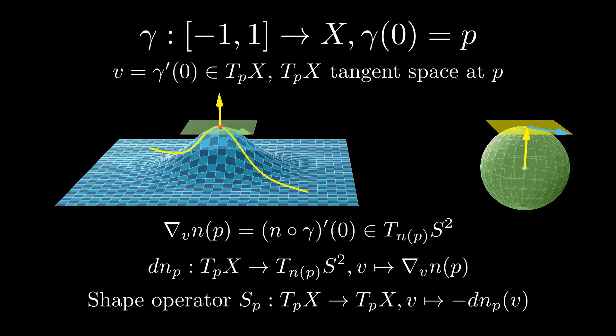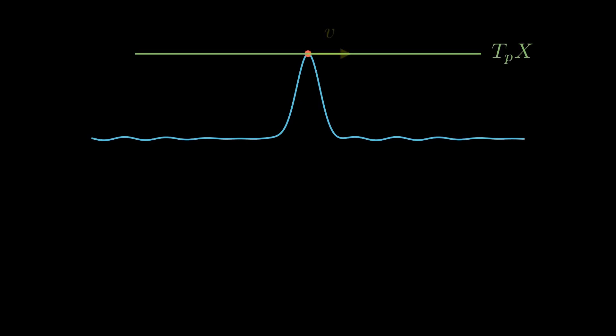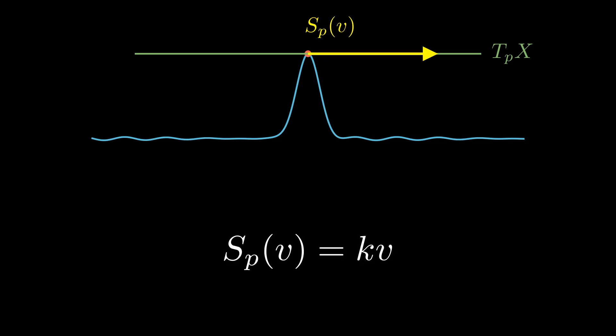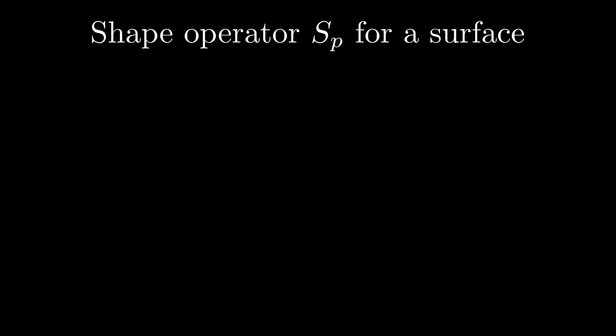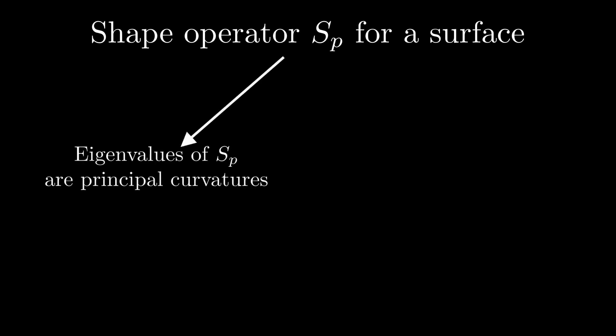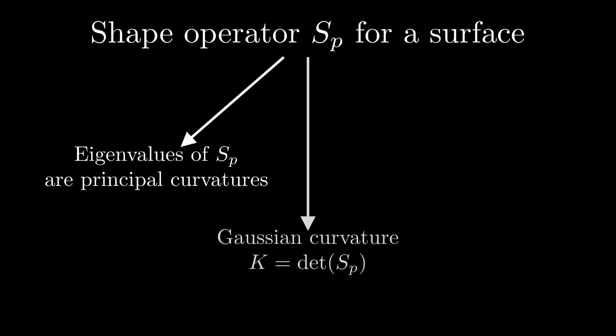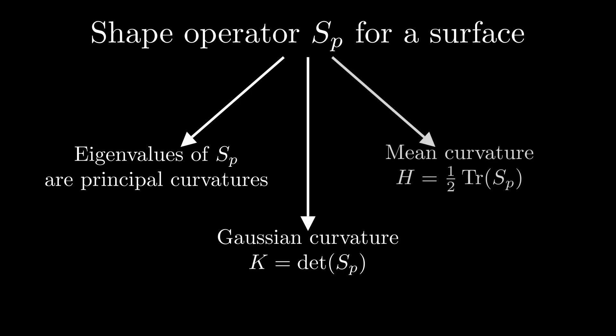This is a linear operator. For plane curves, the tangent space is just a line. The shape operator then acts as a simple scaling factor on that line, which corresponds exactly to the curvature at that point. This curvature is also the only eigenvalue of the shape operator. For surfaces, the eigenvalues of the shape operator are exactly the principal curvatures. The determinant is the Gaussian curvature and half of the trace is the mean curvature. So all the information about the curvature of the surface is encoded in the shape operator.